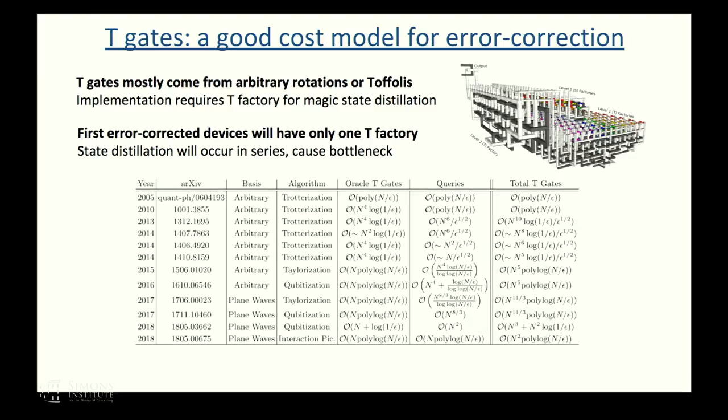In the interest of time, I'm not going to actually really talk much about this. I have this table where I've sort of tabulated how the T gates and various approaches to this problem have come down over time. Recently, we've made some progress getting down to n to the third and then N squared with signal processing. But I do want to warn you that asymptotic complexity can be misleading. In fact, the authors of this signal processing, of this interaction picture paper would agree that the particular way they do this for chemistry will have some very high constant factors that, for instance, make it probably not competitive for the first error-corrected devices with the algorithm above it.